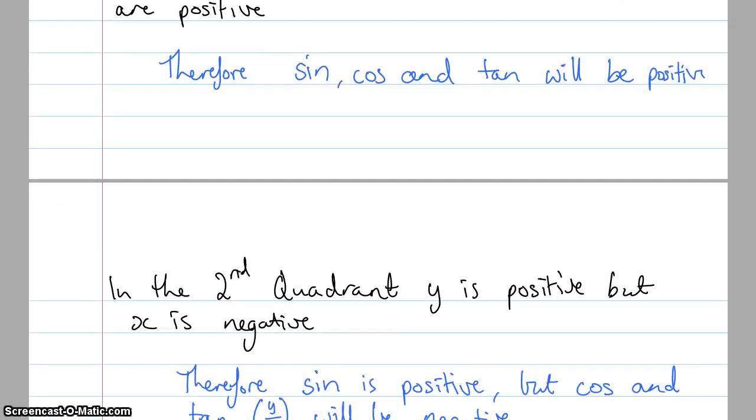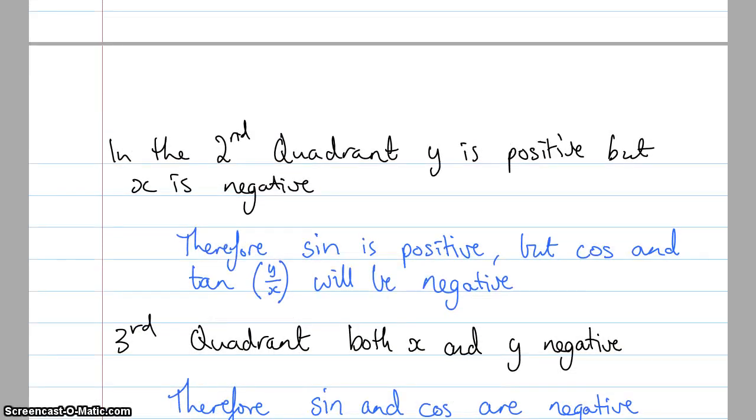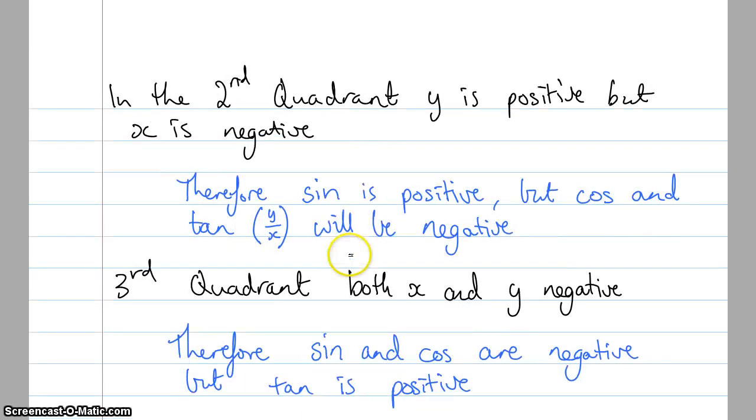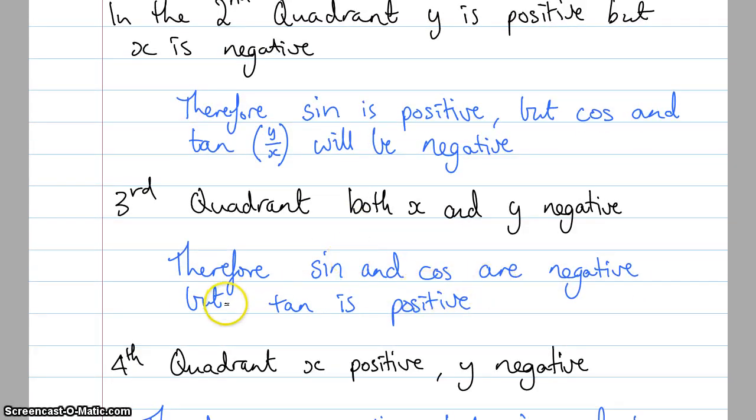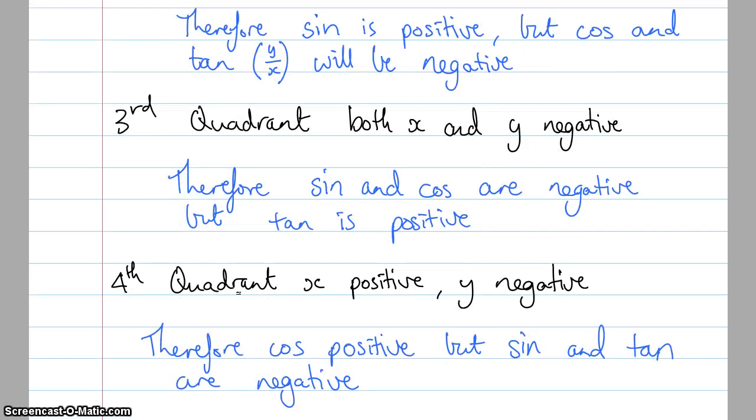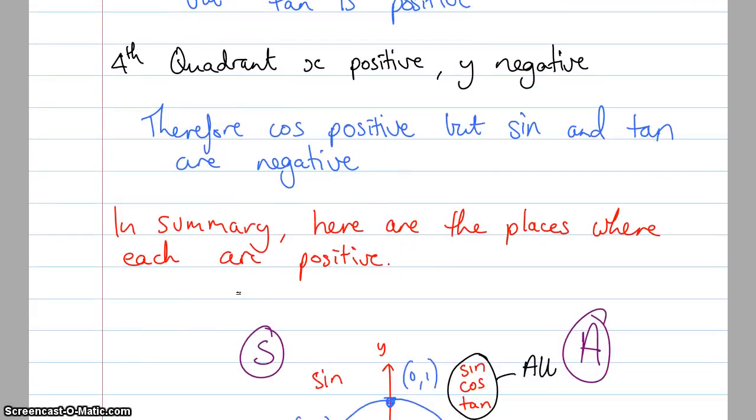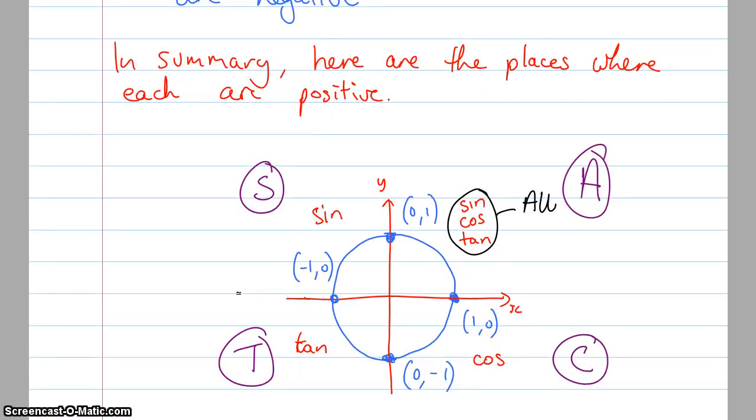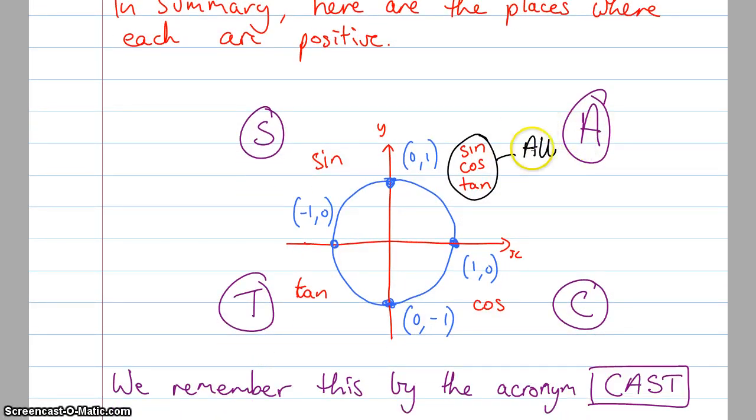In the second quadrant, y is positive but x is negative. So sine is positive but cos and tan will be negative. Third quadrant, sine and cos are negative but tan will be positive because we get a negative divided by a negative. In the fourth quadrant, cos is positive but sine and tan are both negative. In summary, in this quadrant all of them are positive. In this quadrant, only sine is positive. Only tan is positive. Only cos is positive. And we can remember that by using the CAST acronym or all stations to Croydon.